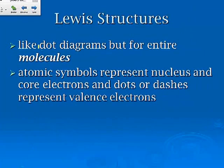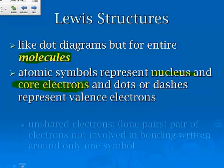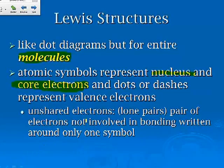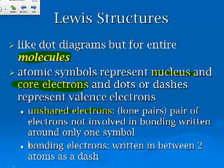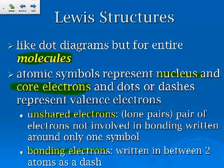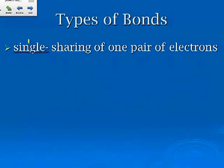Now for Lewis structures, we do dot diagrams but for the entire molecule. The atomic symbols represent the nucleus and the core electrons. Remember, core electrons are ones that are not given away. They're locked in, represented by that noble gas notation. Dots or dashes represent the valence electrons. Unshared electrons or lone pairs are a pair of electrons not involved in the bonding, written around only one symbol. Bonding electrons are written in between two atoms as a dash.